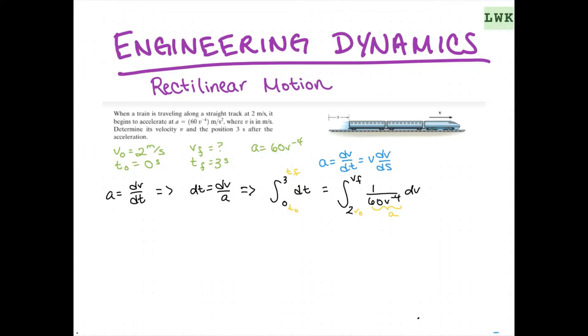All right. So, this is going to come out to be 3 equals 1 over 300 (v to the 5th minus 32) when simplified. And that's just calculus. Nothing fancy there. And basically, just solving for v. V is going to be equal to 3.93 meters per second at time t equals 3 seconds. So, that's great. So, we have already solved one part of the problem.